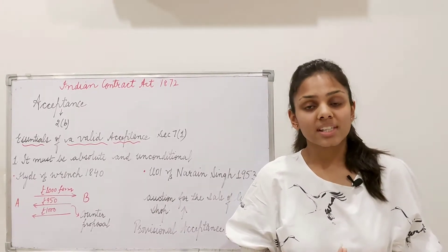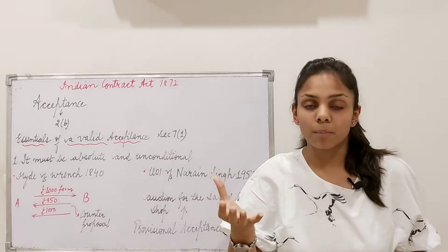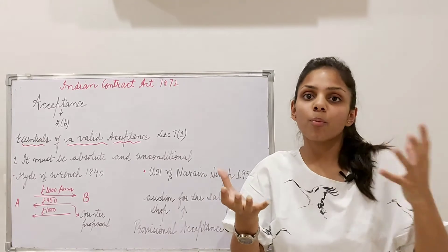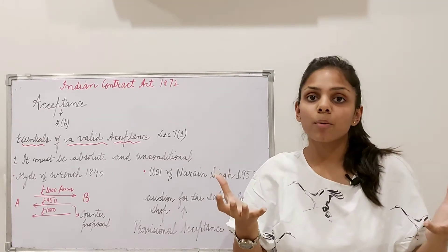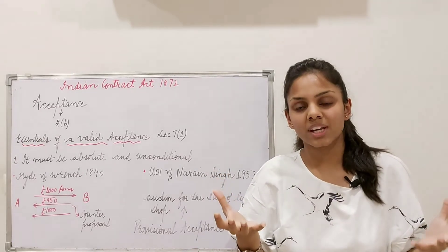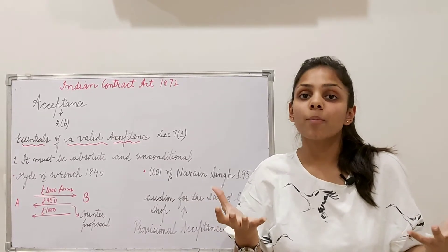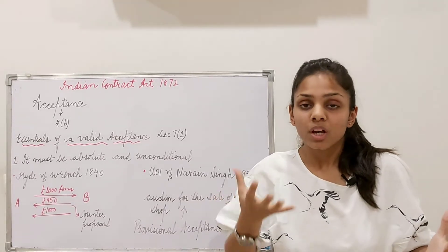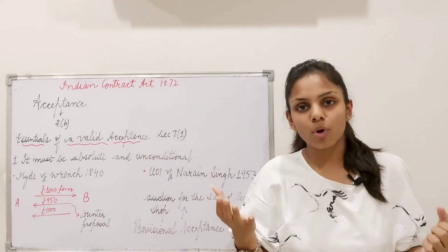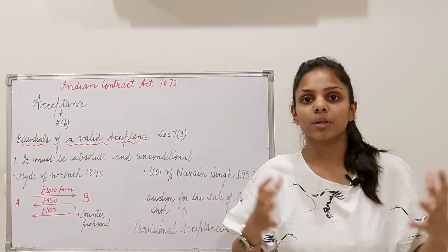Now the important point is that first there is A's proposal. A is the proposer and he makes the proposal to the proposee. Once B has accepted this proposal, he becomes an acceptor — in other words, he becomes a promisee. So A becomes the promisor and B becomes the promisee, or the acceptor.